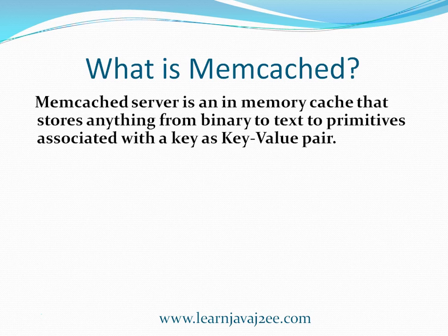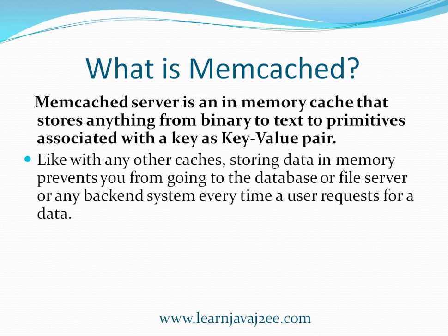So what is Memcached? Memcached server is an in-memory cache that stores anything from binary to text or primitives associated with a key. Memcached stores data in RAM in the form of key-value pairs. Memcached is essentially a very big hash map that stores data in the form of keys and values. So it is not a persistent database — it is just a map which stores data in your machine's RAM.